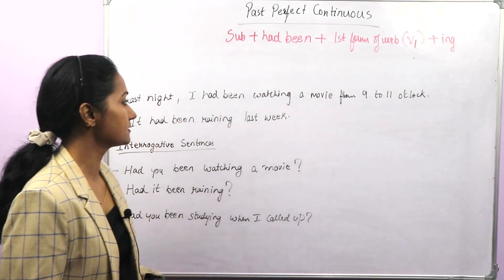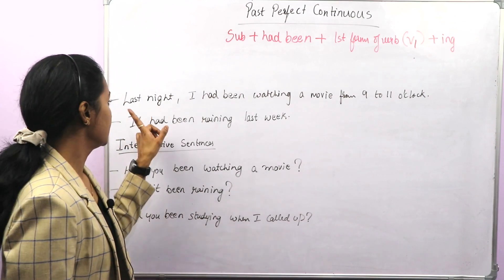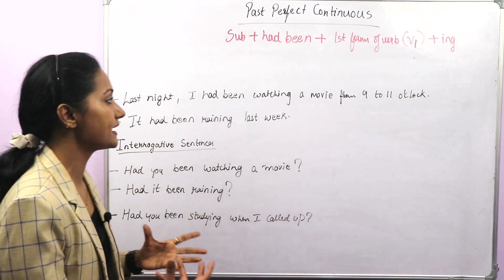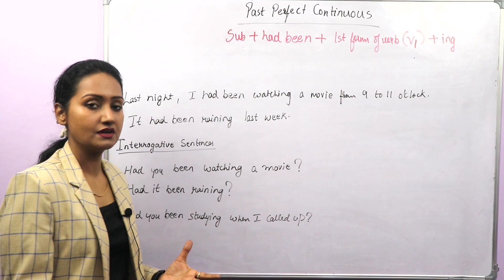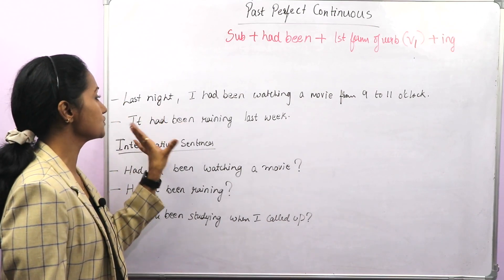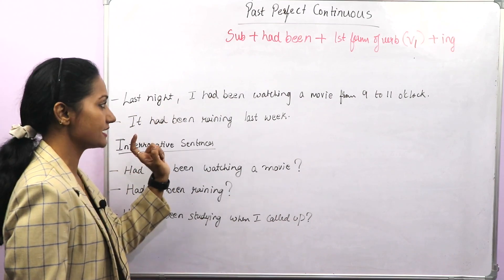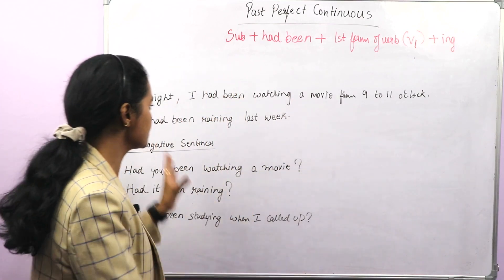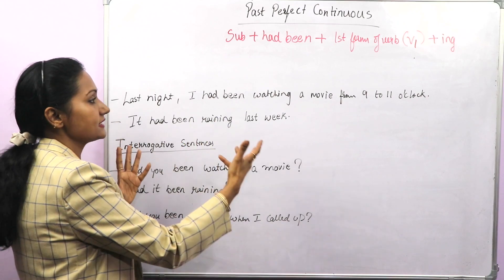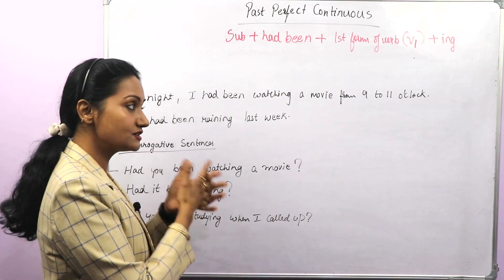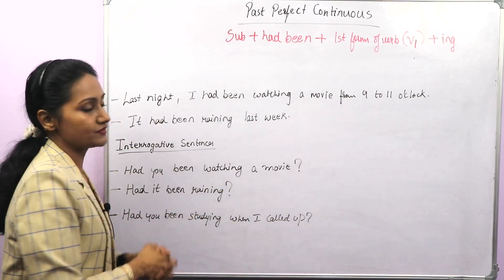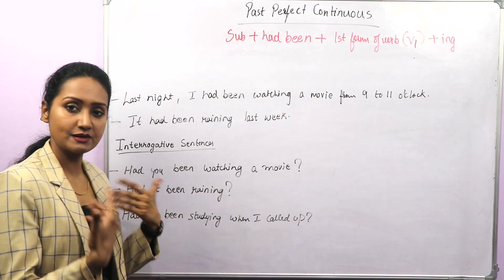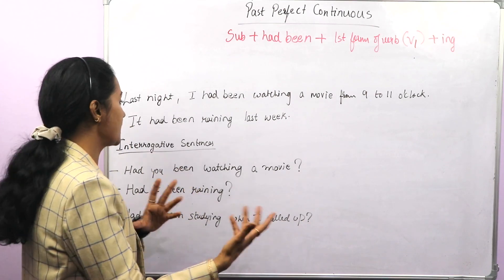Sometimes we make sentences without a past action. For example, 'Last night I had been watching a movie from nine to eleven o'clock.' We do not have a past situation or past action, but we have a time which shows we are talking about past — last night — and an action had been going on for two hours, so there is a duration. That's why we use past perfect continuous tense. Another example: 'It had been raining last week' — last week is a time in past, so throughout last week it had been raining.